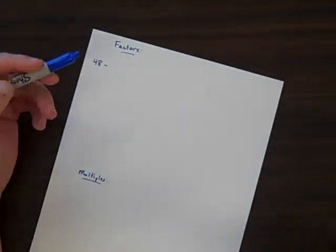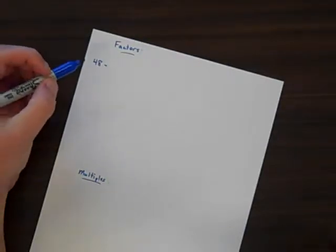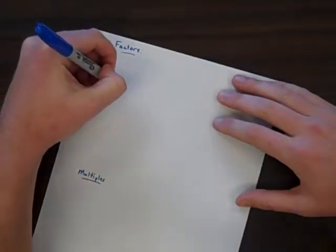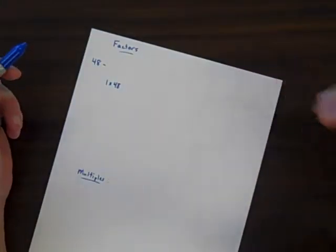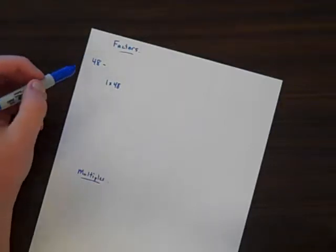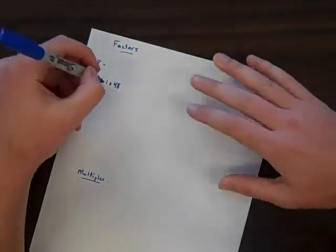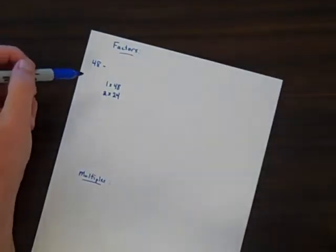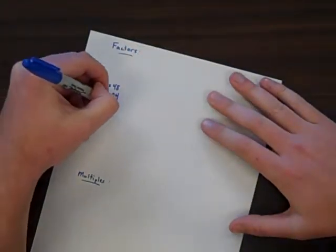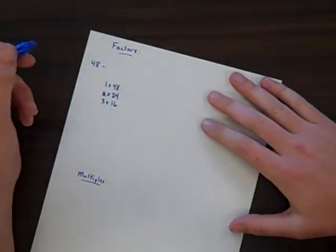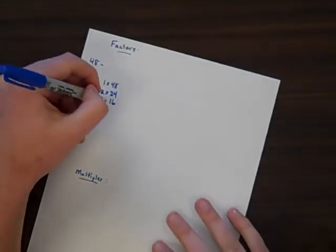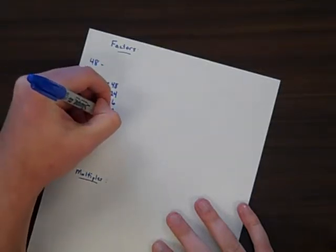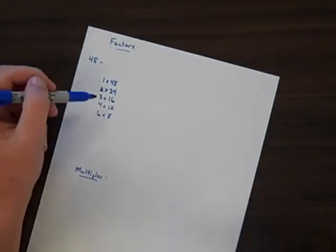Now, factors are which number times which number gets you to 48. For example, I know that 1 times 48 is 48. And again, you'll need to think of every possible way to get to 48. I know that 2 times 24 will get me to 48. I also know that 3 times 16 will get me to 48, along with 4 times 12 and 6 times 8.